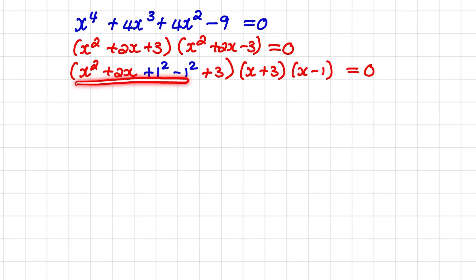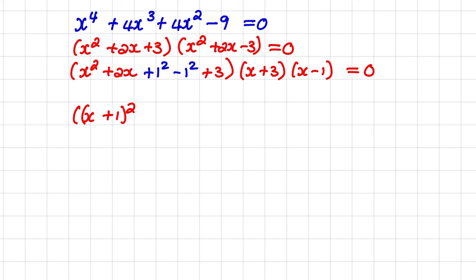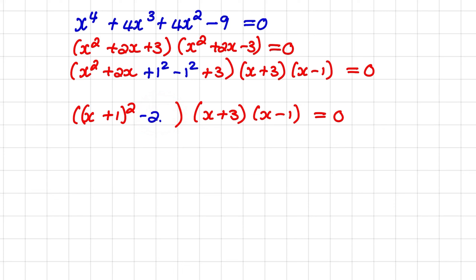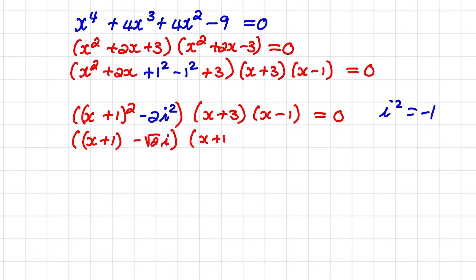Now we just need to focus on this part. We know that when we complete the square the first three terms form a perfect square, so that will result in x plus 1 squared. Then minus 1 plus 3 is simply plus 2. We can rewrite plus 2 as negative 2i squared, where i squared equals negative 1. And that allows us to factor further as x plus 1 minus the square root of 2i times x plus 1 plus the square root of 2i times x plus 3 times x minus 1, equal to 0.